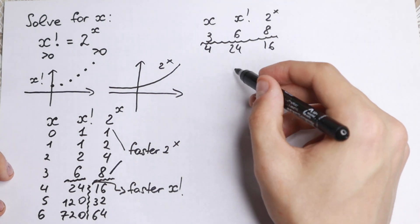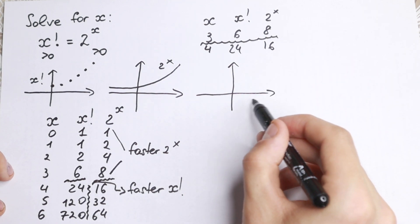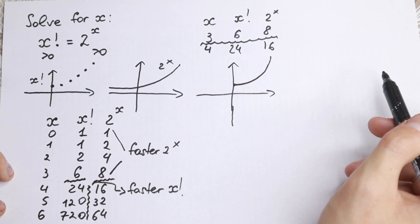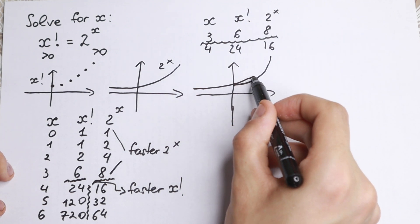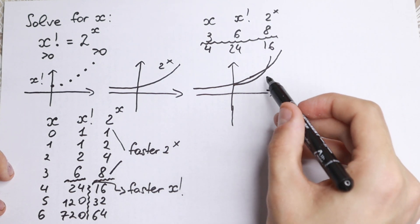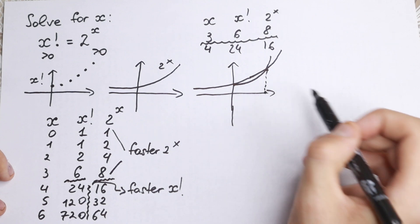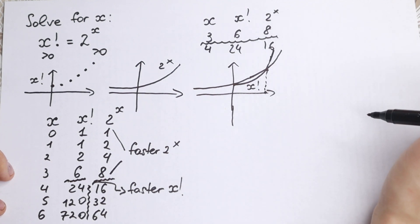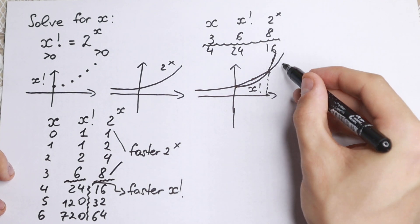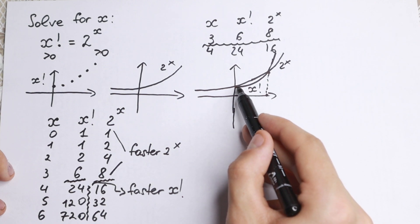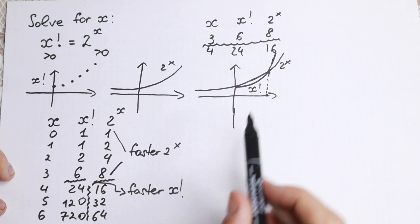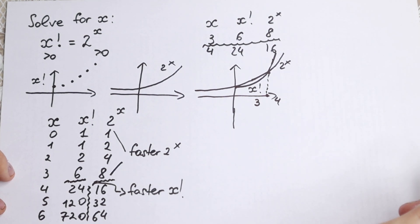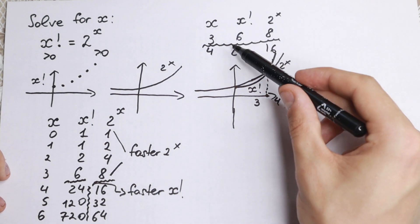If we look at the graph with both functions plotted together, the factorial function and the exponential function intersect at a point between 3 and 4. After that point, the factorial function grows much faster to plus infinity. Before that point, 2 to the x grows faster. So our point of intersection will be between 3 and 4.